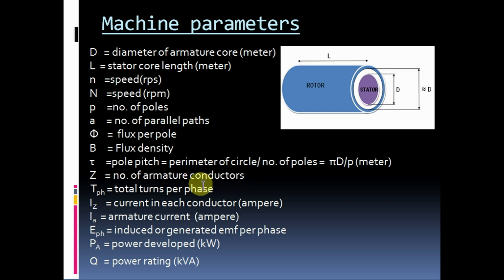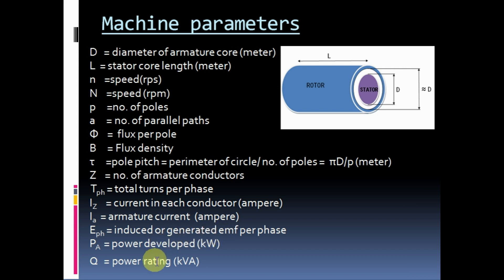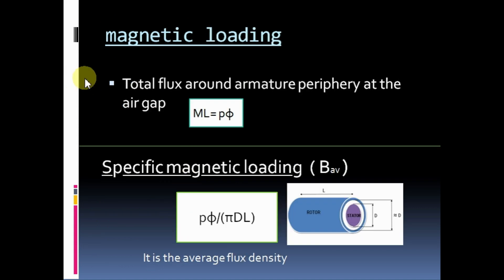Z equals number of armature conductors. Tph equals total turns per phase. Iz equals current in each conductor in ampere. Ia equals armature current in ampere. Eph equals induced or generated EMF per phase. P·Ia equals power developed in kW. Q equals power rating in kVA.